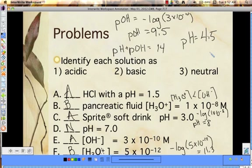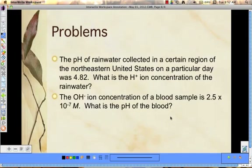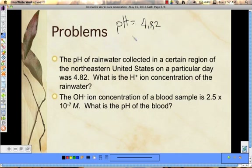Rainwater collected in a certain region in the northeastern United States on a particular day had a pH of 4.82. They want to know what the hydronium concentration is. There are a couple of different ways we could solve for this.